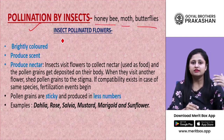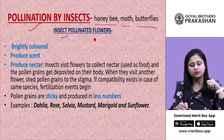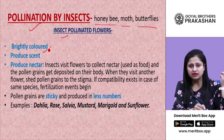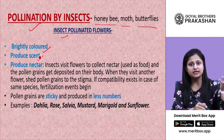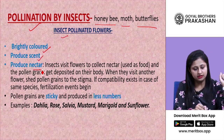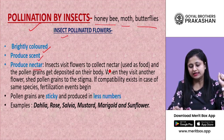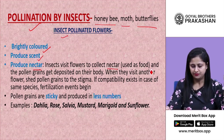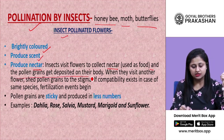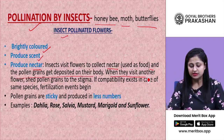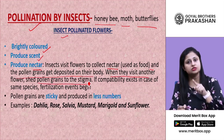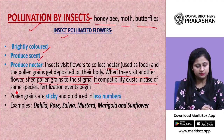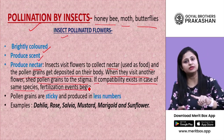Insect-pollinated flowers have characteristic features: they are bright in color, they produce scent or fragrance to attract insects, and they produce nectar because insects visit flowers to collect nectar as food. Pollen grains get deposited on their body or fur, and when they visit another flower, they shed pollen grains onto the stigma. If compatibility exists in case of the same species, then only fertilization begins.